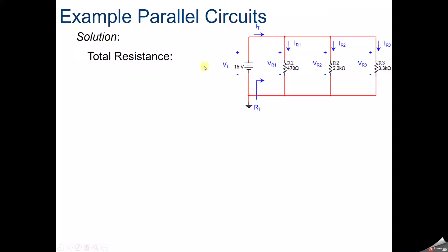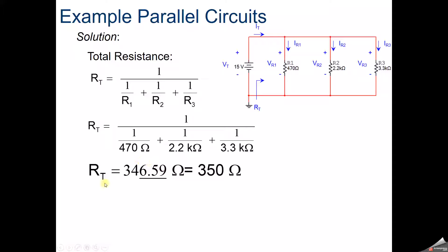So when we have a parallel circuit, first thing we're going to calculate is the total resistance. To do so, we're going to take the inverse of the inverses, so 1 over 470 plus 1 over 2,200 plus 1 over 3,300. Get that answer, take 1 divided by that answer itself, we get a total resistance of 350. You should start to notice that total resistance is less than any other resistor that we've got there. So as you add resistors in, because you're making your denominator larger, your total resistor is decreasing.